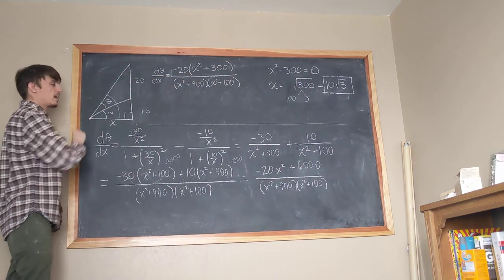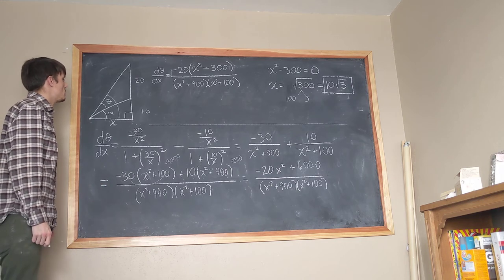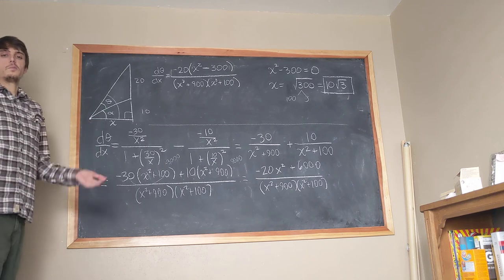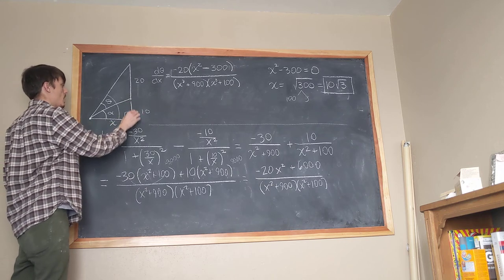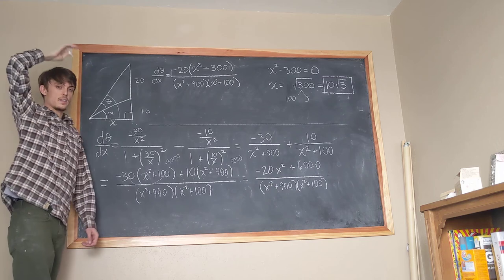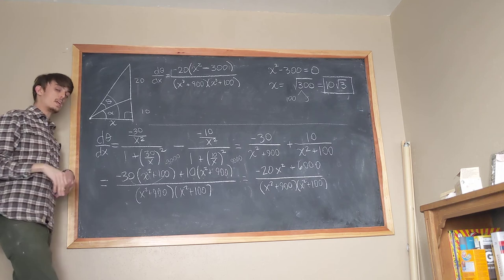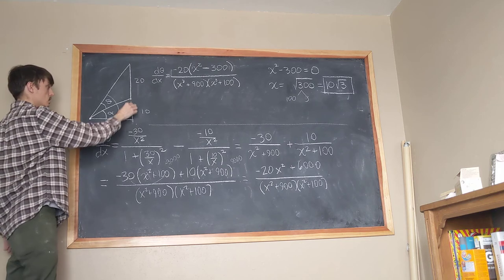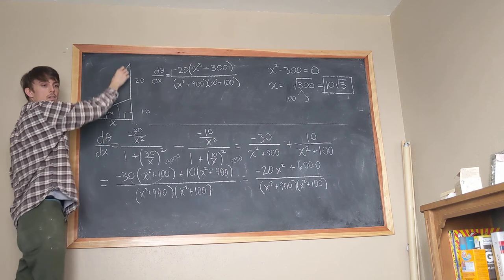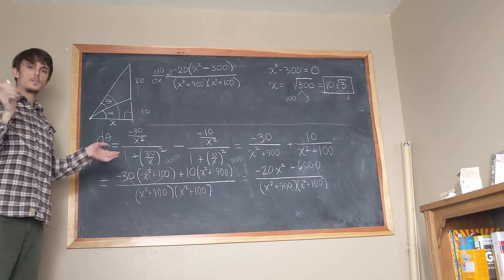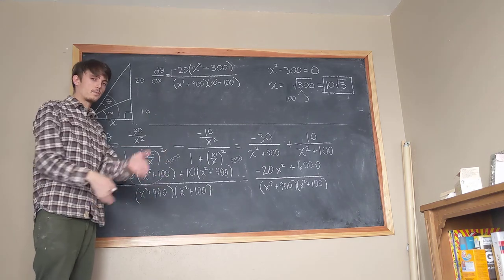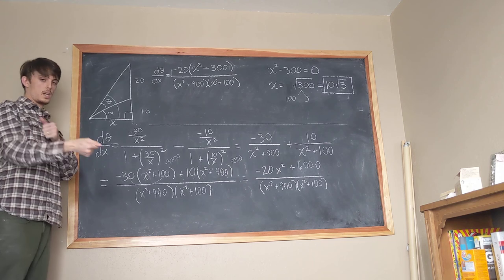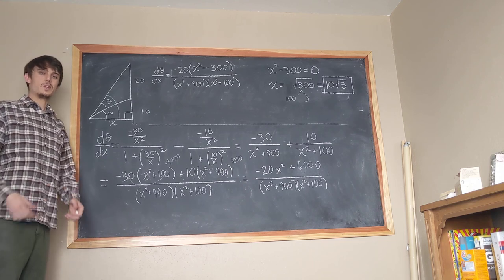So sitting 10 times the square root of 3 feet — roughly 17-point-something feet — back from the screen gives you the maximal viewing angle. You can adapt this to your living room: the 10-foot measurement becomes the height of your TV above eye level when seated, and the 20-foot screen height becomes your TV's screen size. Measure it up and optimize your couch position!